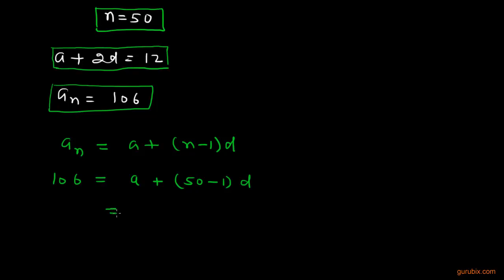So this is A plus 49D equals 106. We shall let this be equation number 2, and the earlier one is equation number 1.